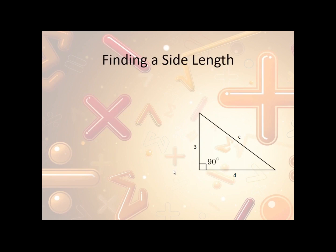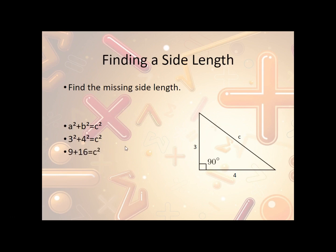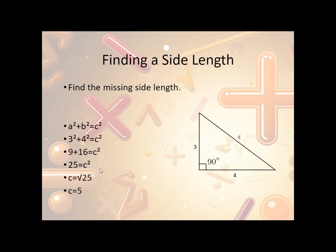So how do we find a side length? Let's say A is 3 and B is 4 and we want to know what C is. So we have A squared plus B squared equals C squared. We plug in: 3 squared plus 4 squared equals C squared. 3 squared is 9, 4 squared is 16. When we add those together, we get 25. So 25 equals C squared. The square root of 25 is 5, so C is equal to 5.